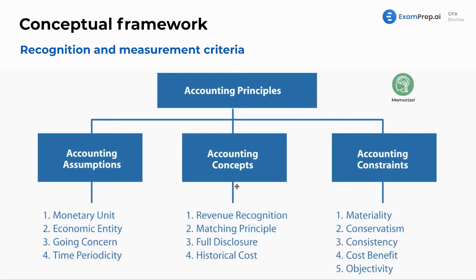Now the constraints — what makes these concepts and assumptions harder to apply. Materiality: if we've got a $100 fraud, it's not worth reporting, or if we can't tie a $200 accounts receivable balance — who cares if it's a $100 billion company — it's not material. Conservatism and consistency — consistency is just what we talked about: financial statements being comparable year to year.